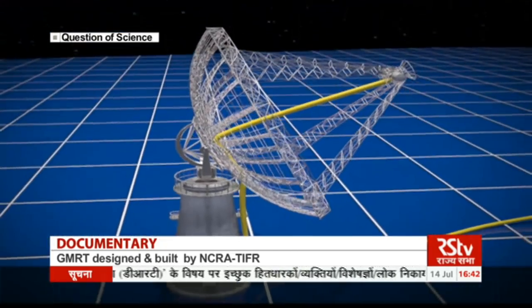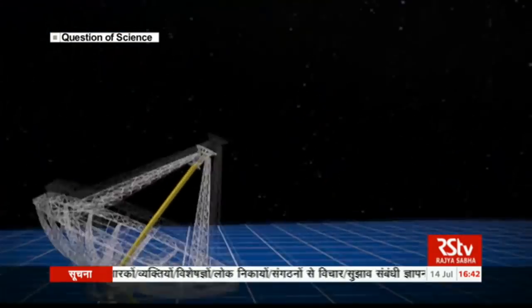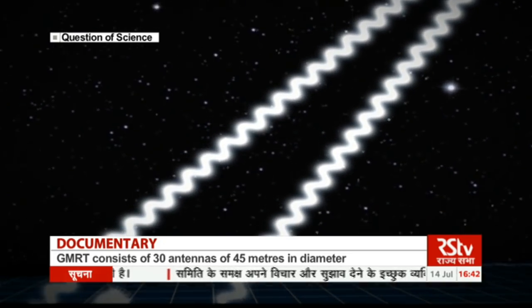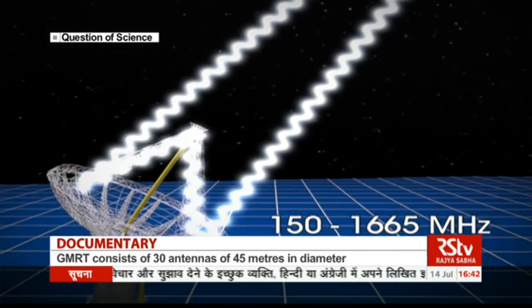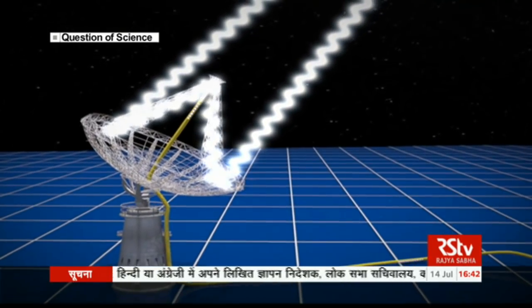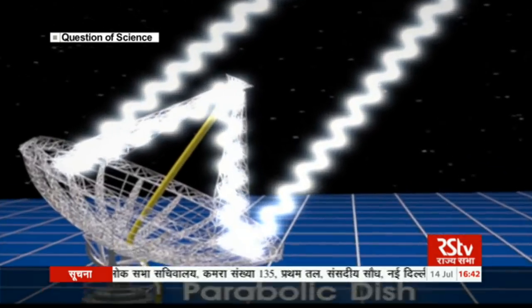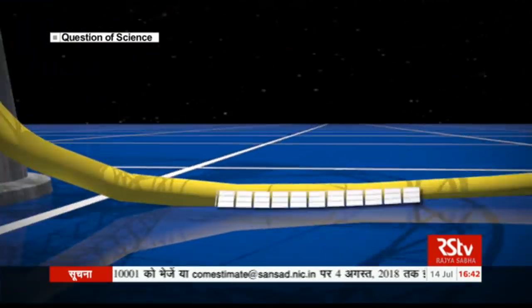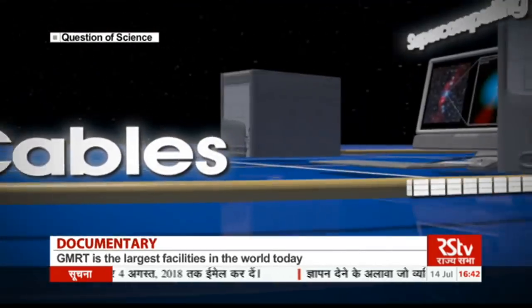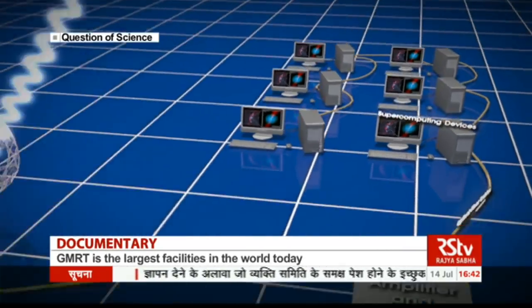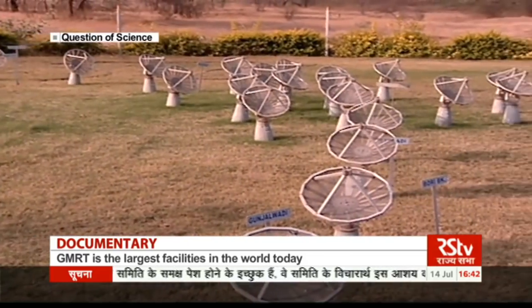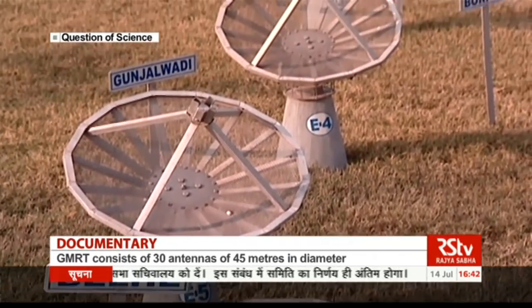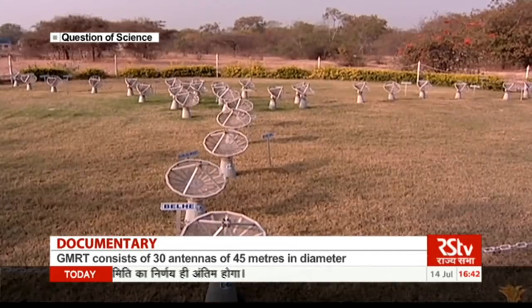These massive antennae are designed to receive extremely faint radio signals from faraway objects in our cosmos. The signals are received in the low frequency range of 150 to 1665 megahertz, collected by parabolic dishes and captured by radio receivers. These weak radio signals are then amplified and carried away by optical fiber cables to supercomputing devices. This happens for each of the 30 antennae spread across 25 kilometers, and the information from individual dishes is mathematically combined until a complete image of the radio source emerges.